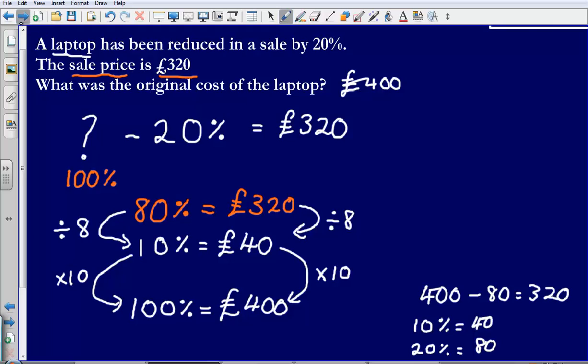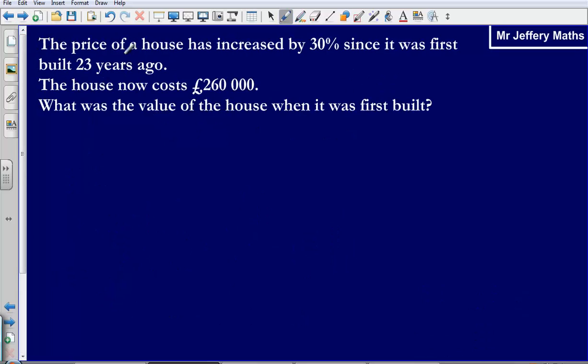OK, let's take a look at another example. Here we're told that the price of a house has increased by 30% since it was first built 23 years ago. The house now costs £260,000. What was the value of the house when it was first built?